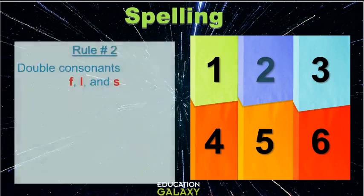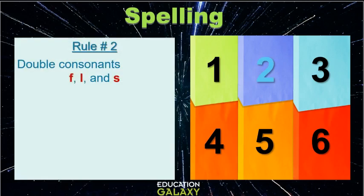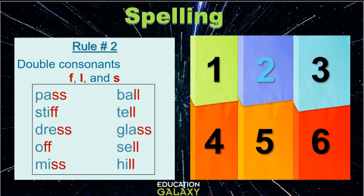Rule number two. Double consonants. We often double the letters F, L and S when they come at the end of one syllable words with only one vowel. All these words are one syllable and they all have just one vowel. So we double the final S or F or L in these words.